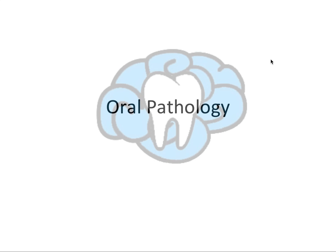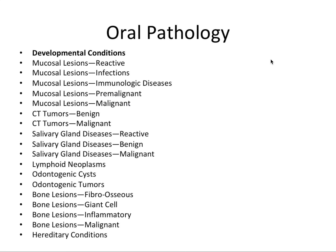If you like this type of info, you may want to check out Mosby's Review for the NBDE Part 2. Much of the info I'll be going over is adapted from that book, and I'll leave a link in the description below. So these are all of the categories we're going to be talking about one video at a time, organized by tissue type and then by the type of lesion — reactive, infectious, immunologic, and so on.